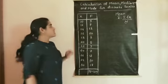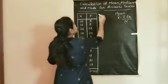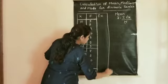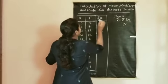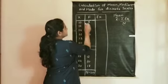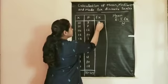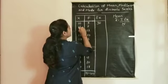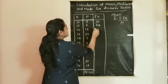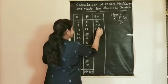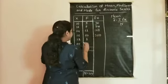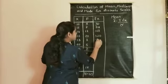To find the summation of fx, we first calculate the fx values by multiplying f into x for each data point. So: 10 × 3 = 30, 12 × 7 = 84, 14 × 12 = 168, 16 × 20 = 320, and 18 × 8 = 144.